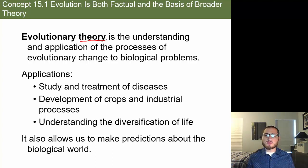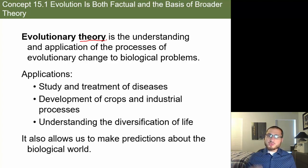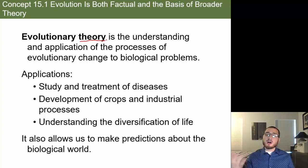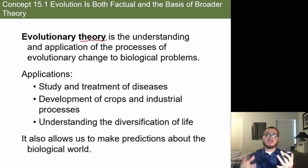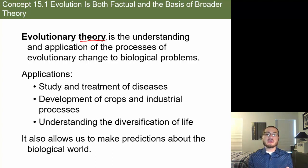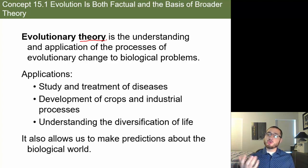In physics, there are many laws because you can recreate how matter is influenced by energy and prove it happens every time. But evolution deals with things that happened in the past. I can try to recreate scenarios in the lab, but I can't go back in time and show you that fish became amphibians. All I can do is present fossil evidence, genetic evidence, and morphological evidence. Instead of calling it a law, I have to call it a theory.